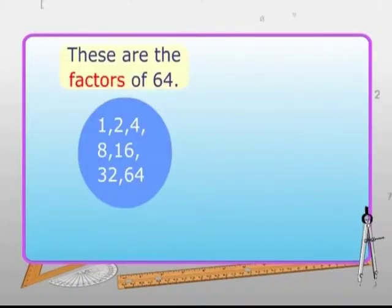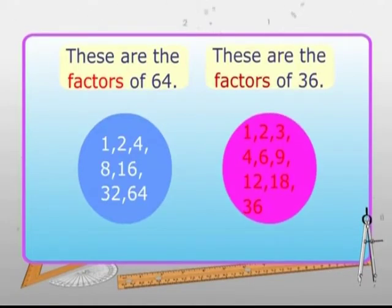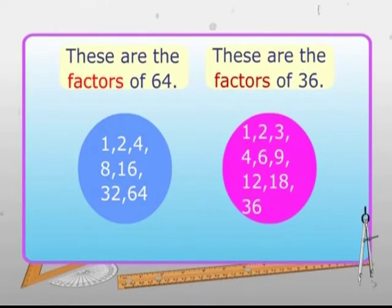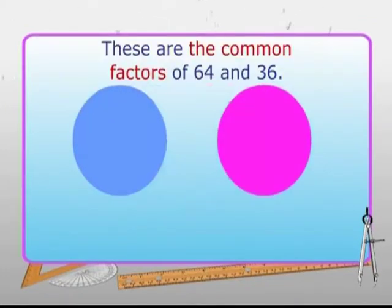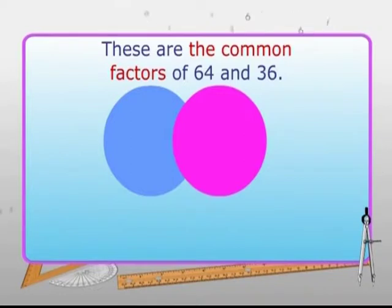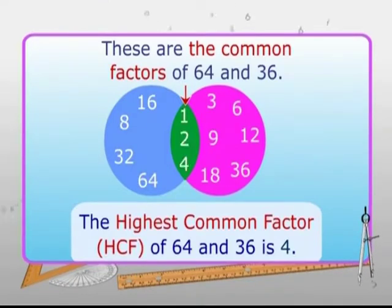Consider the number 64. The factors of 64 are 1, 2, 4, 8, 16, 32 and 64. Now, the factors of the number 36 are 1, 2, 3, 4, 6, 9, 12, 18 and 36. Now observe the common factors of the numbers 64 and 36. You can see that the highest common factor of the numbers 64 and 36 is 4.